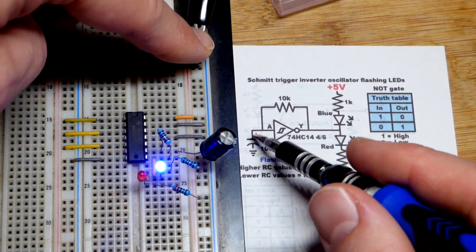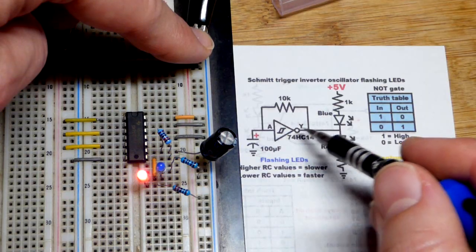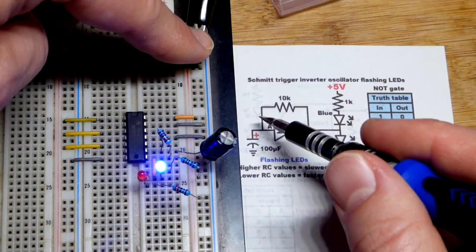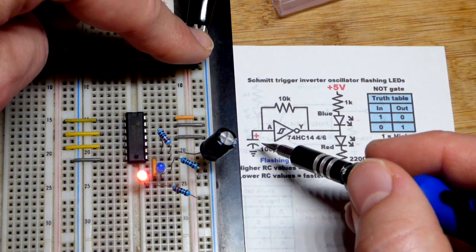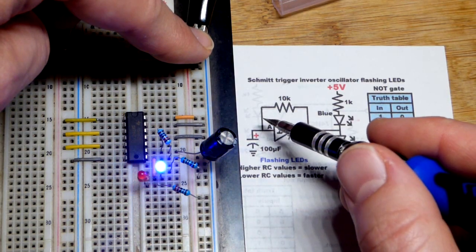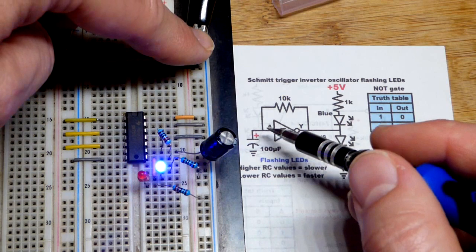When the input is low, output's high. But once you go high enough to go high, then you've got to go down a little bit more to go low, and then you've got to go up a little bit higher to go high. That's the Schmitt trigger effect right there.